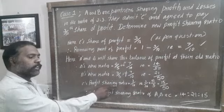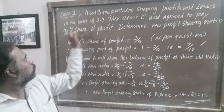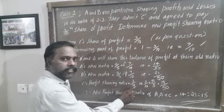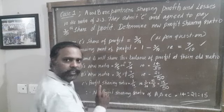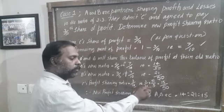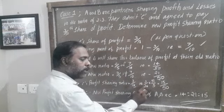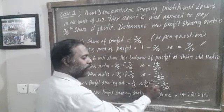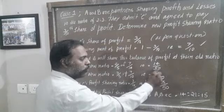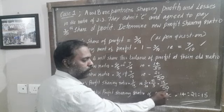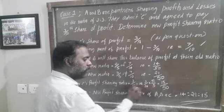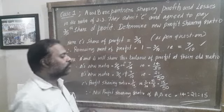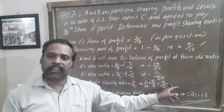C's profit sharing ratio is already given in the question as 3/10. Here the denominator is 10, and we have to change this denominator to 50. To make this change, we multiply both the numerator and denominator by 5/5. That gives 3 multiplied by 5 equals 15, and 10 multiplied by 5 equals 50. So C's new profit sharing ratio is 15/50.